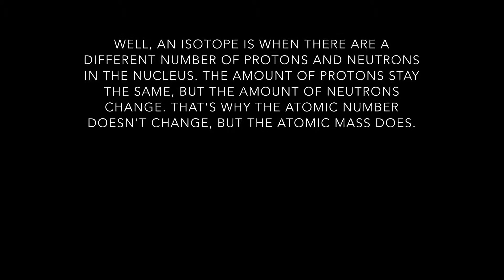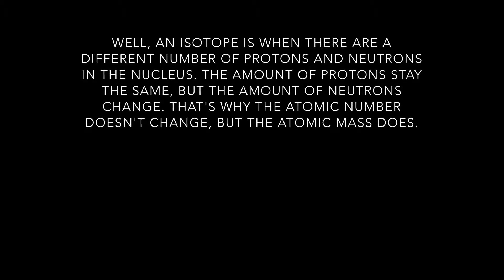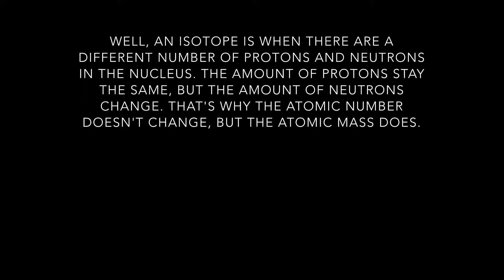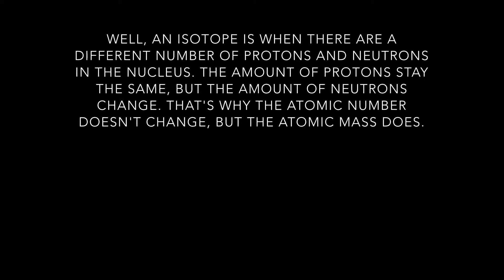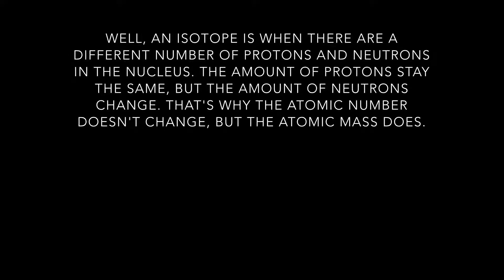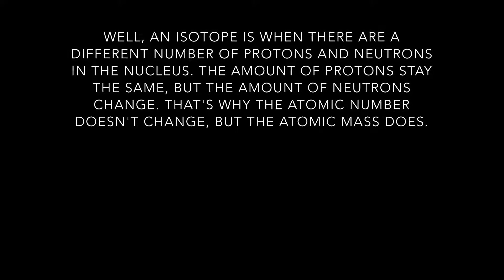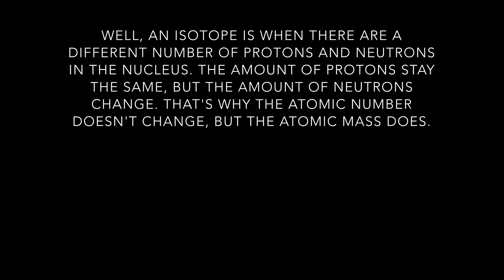Now, what's an isotope? An isotope is when there are a different number of protons and neutrons in the nucleus. The amount of protons stay the same, but the amount of neutrons change. That's why the atomic number doesn't change, but the atomic mass does.